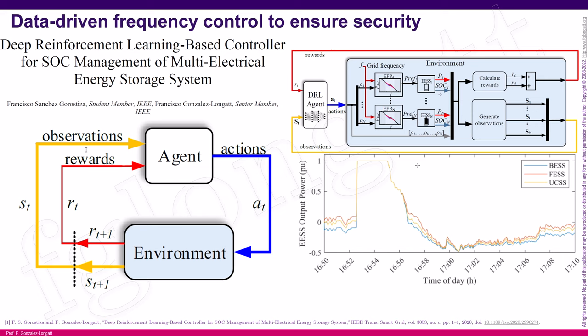Then we started to innovate using artificial intelligence. One very interesting success was using agents: in 2020, we created a deep reinforcement learning controller for controlling multi-energy storage — ultracapacitor, flywheel, and battery energy storage. The agent made decisions about the power each energy storage asset must deliver while considering restrictions on state of charge. For that reason, we were one of the first groups to use data-driven technologies to provide controllers for frequency control.